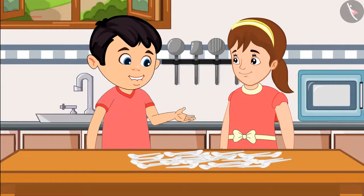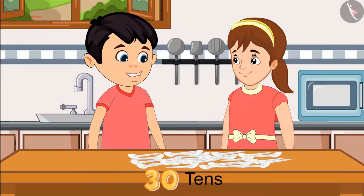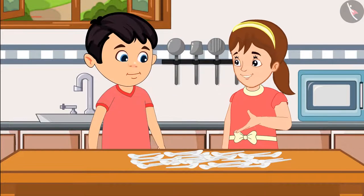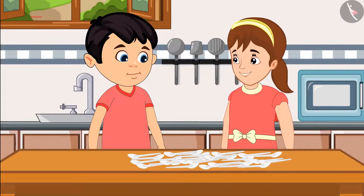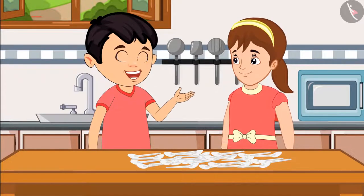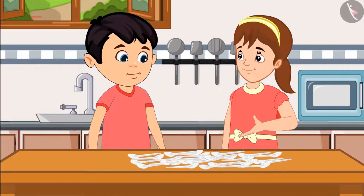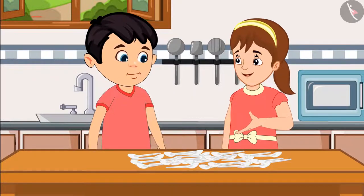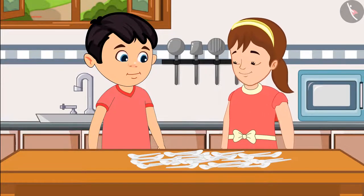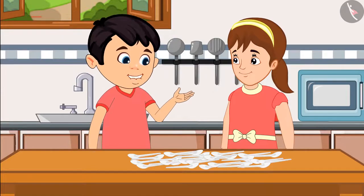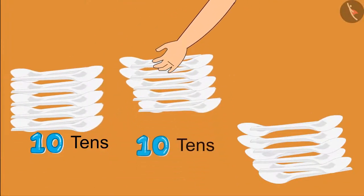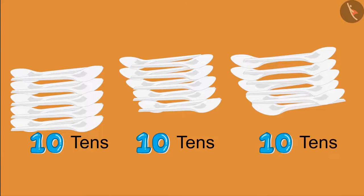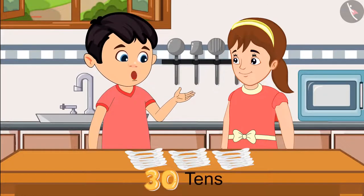Aarti asks how many spoons there are. Chotu says he took 30 groups of 10 spoons from the shop, but Aarti says 30 groups is a lot and the spoons seem very few. They decide to count again by dividing them into groups of 10. Chotu counts: 10, 10, and another 10 — so a total of 30 tens, he says.